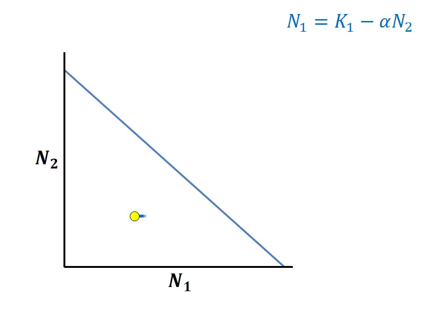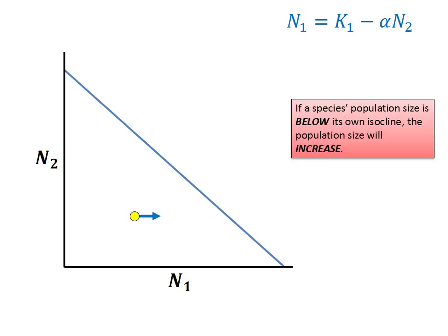This is a generalization that will hold true whenever you are examining a point relative to an isocline. If a species population size is below its own isocline, the population size will increase. This makes both logical and mathematical sense. If the number of competitors was reduced below the level required to keep species 1 in check, species 1 will be able to grow in size.